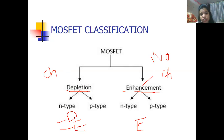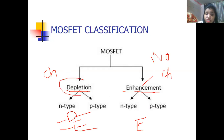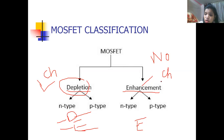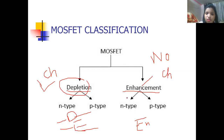As the words indicate: depletion means something is depleted or reducing, while enhancement means increasing. In depletion type MOSFET, since the channel is already there, it can be reduced (depletion mode) or increased (enhancement mode). But in enhancement type MOSFET, there is no channel during fabrication — we have to create and enhance the channel. So in enhancement type MOSFET, only enhancement mode is available.